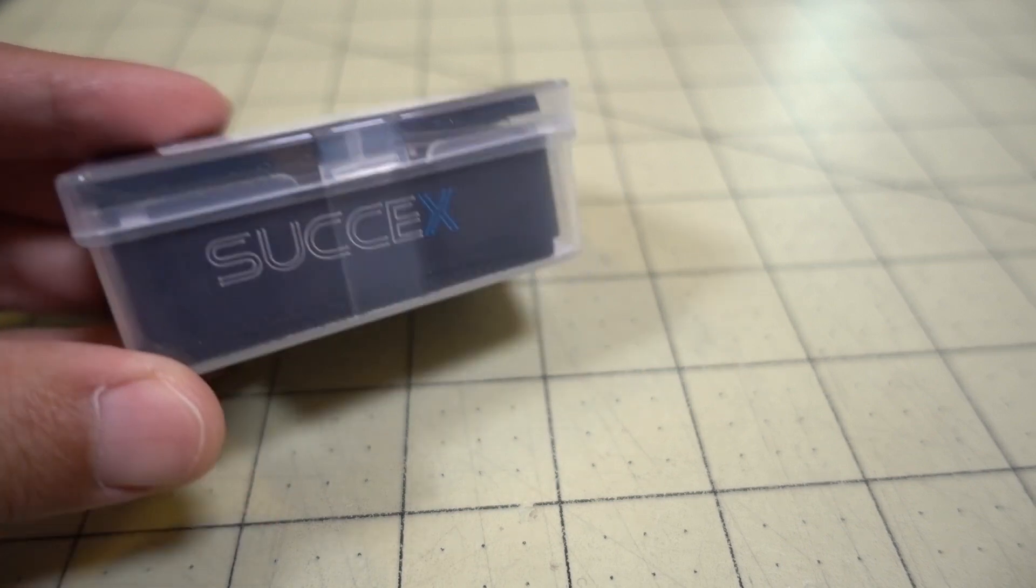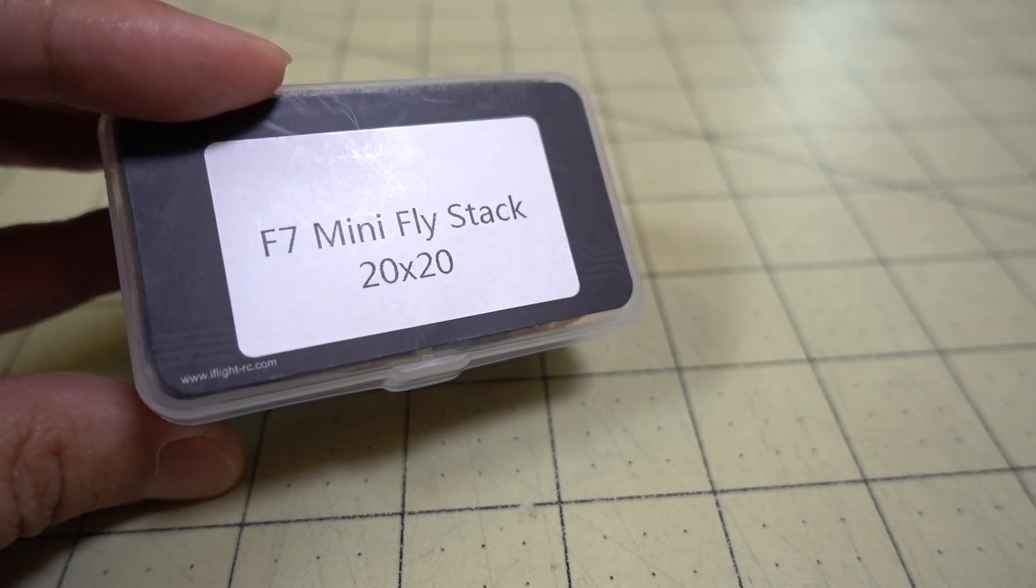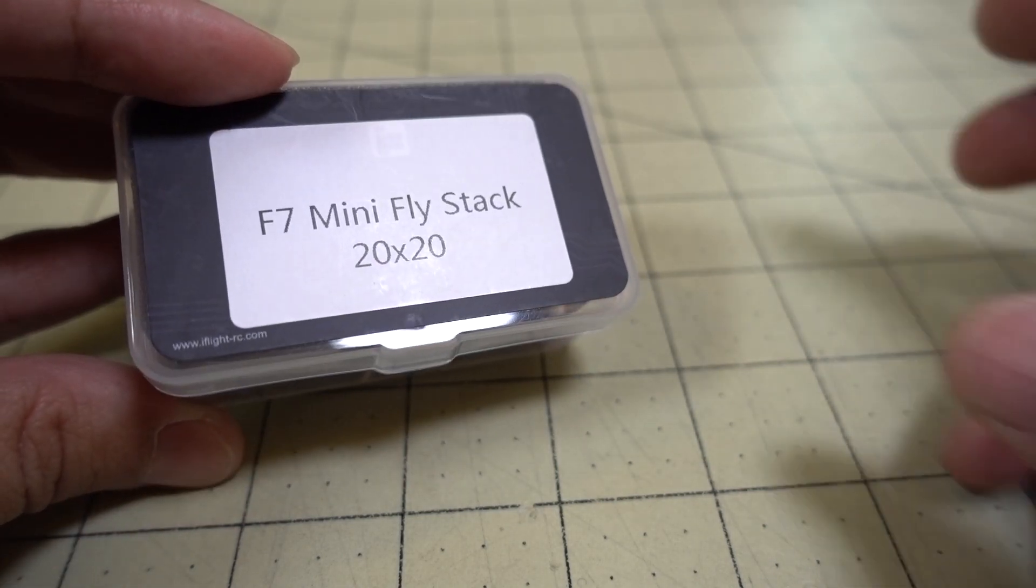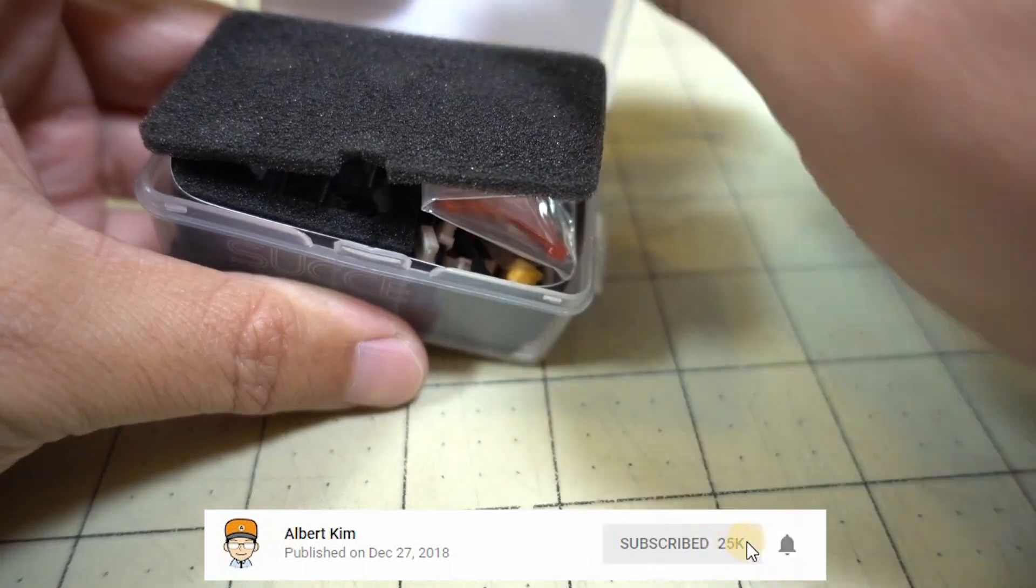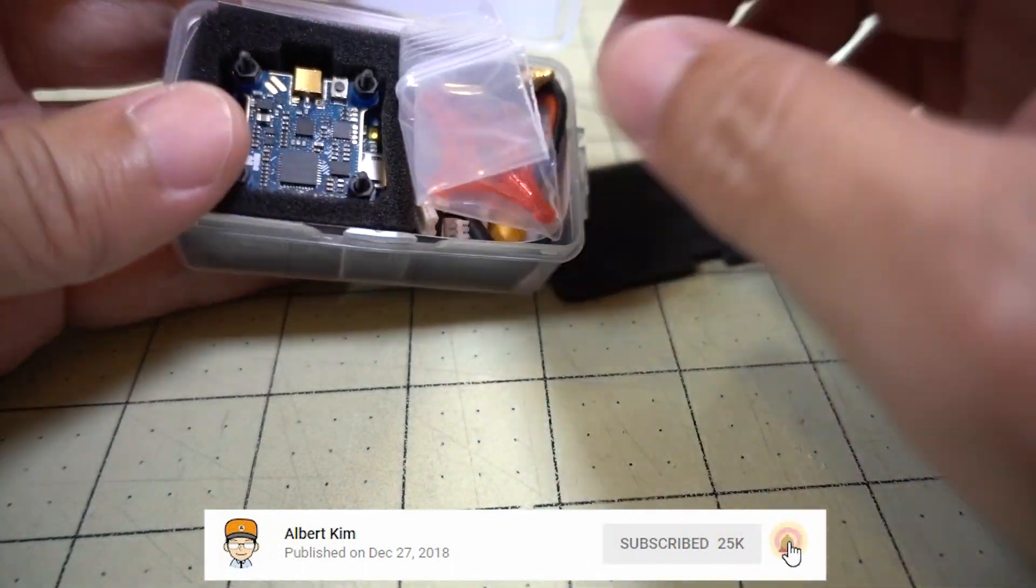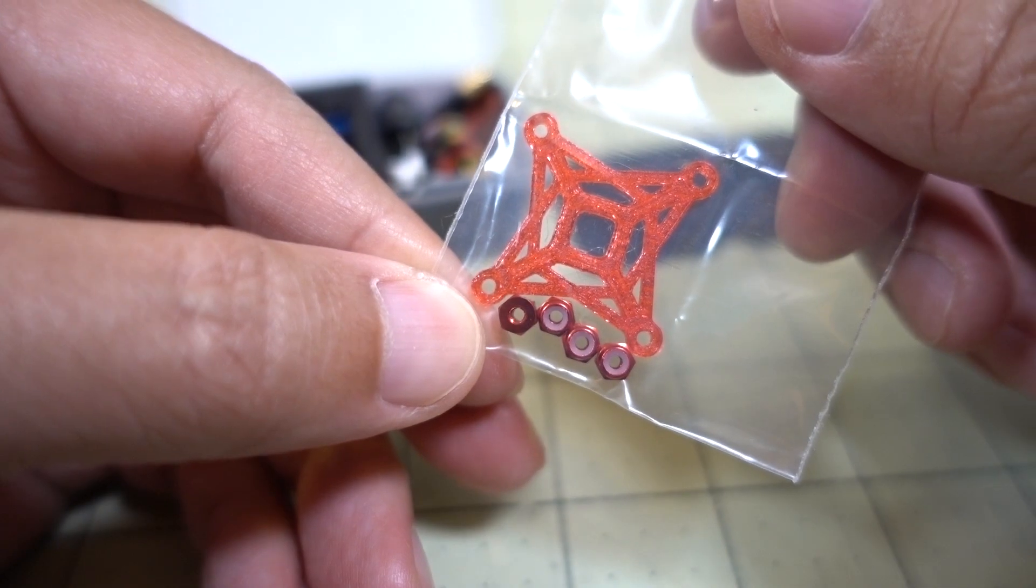Okay, we're checking out another micro flight stack here from iFlight. This is part of their 6S series, new F7 Mini Flystack 20x20. This is going to be an F7 flight controller, a 32-bit 4-in-1 ESC and video transmitter stack. This is pretty new, so I'm not sure if a lot of places have this yet.